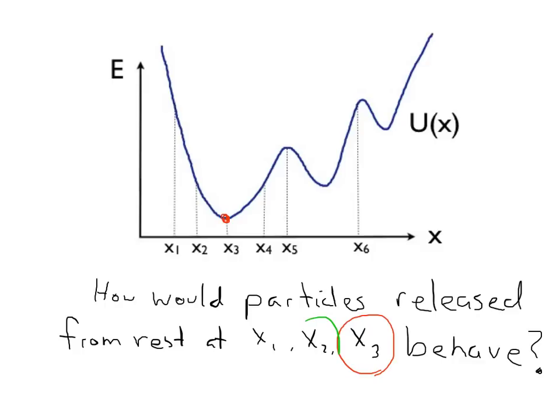Now, point X2: if we put something at point X2, it is going to head down towards the potential minimum at point X3, and then back up. It will reach the same total potential energy on the other side, where its kinetic energy will be zero. So it is going to oscillate back and forth between point X2 and point X4. If I release it at point X2 at rest, it oscillates between X2 and X4.